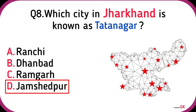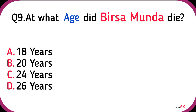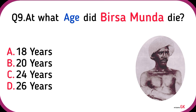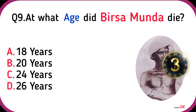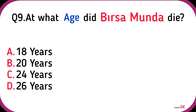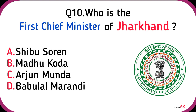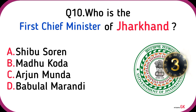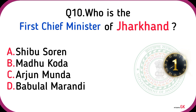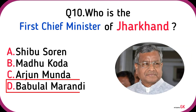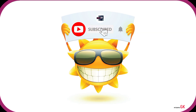At what age did Birsa Munda die? 24 years. Who is the first Chief Minister of Jharkhand? Babulal Marandi.